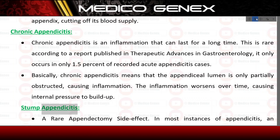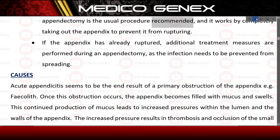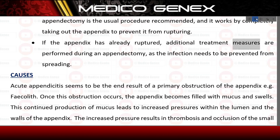Stump appendicitis — a rare appendectomy side effect. In most instances of appendicitis, an appendectomy is the usual procedure recommended, and it works by completely taking out the appendix to prevent it from rupturing. If the appendix has already ruptured, additional treatment measures are performed during an appendectomy, as the infection needs to be prevented from spreading.